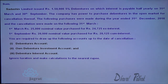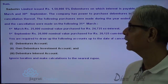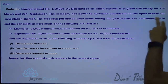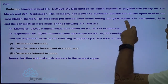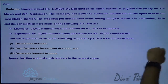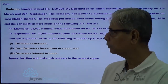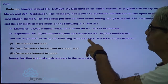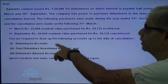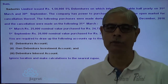Sadashiv Limited issued 1,50,000 5% debentures on which interest is payable half yearly on 31st of March and 30th September. The company has power to purchase the debentures in the open market for cancellation thereof. The following purchases were made during the year ended 31st December 2016, with cancellations made on the following 31st of March. We are required to prepare: debenture account, own debenture investment account, and debenture interest account.